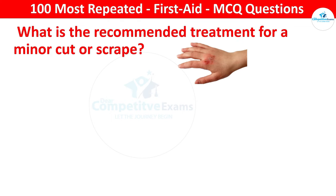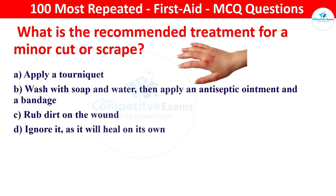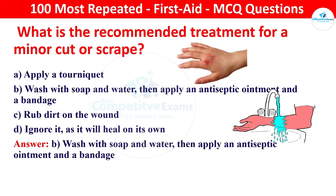Next question: what is the recommended treatment for a minor cut or scrape? Options: wash with soap and water then apply an antiseptic ointment and a bandage, rub dirt on the wound, or ignore it as it will heal on its own. The right answer is wash with soap and water, then apply an antiseptic ointment and bandage it. Proper cleaning and protection help to prevent infection in minor cuts and scrapes.